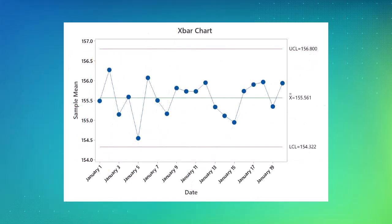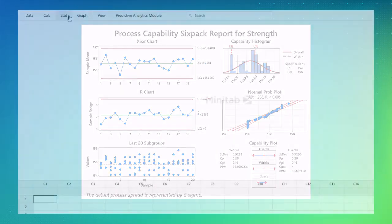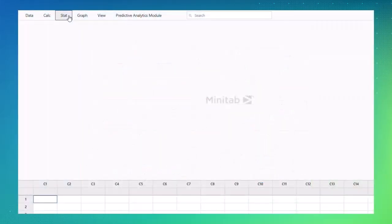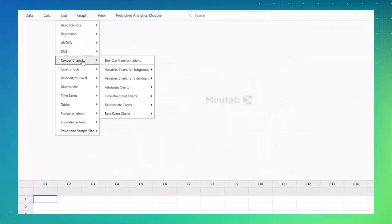Your process data need to be stable and in control before you perform a capability analysis. Minitab offers over 25 control charts that are grouped into six categories based on data type.